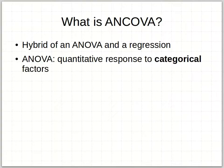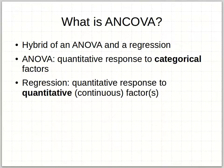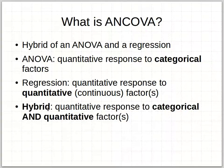Analysis of variance, as you might remember, is looking at the quantitative response to categorical factors — trying to figure out how much of a response was elicited by categorical treatments. A regression, as you might remember, is the quantitative response to quantitative or continuous factors. So a hybrid of these two means we're talking about a quantitative response to both categorical and quantitative factors. It is truly a hybrid of analysis and regression.